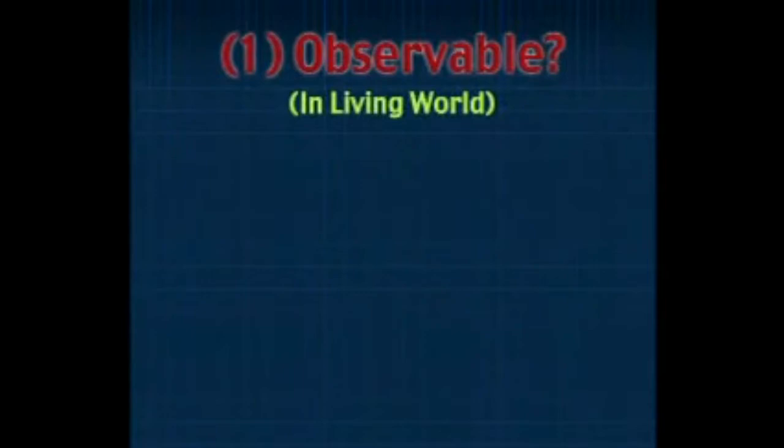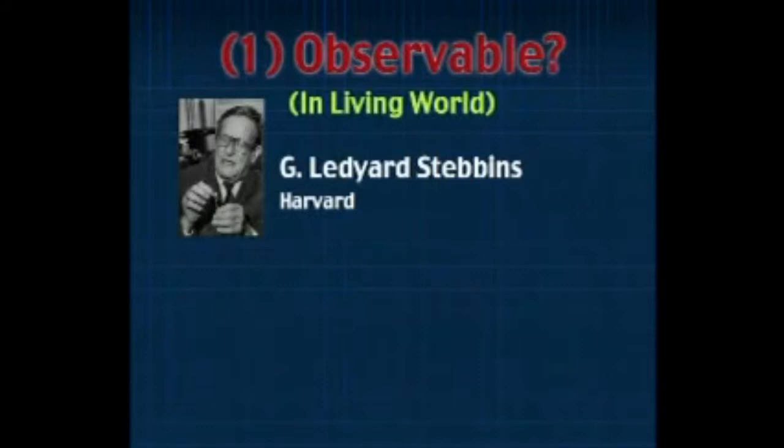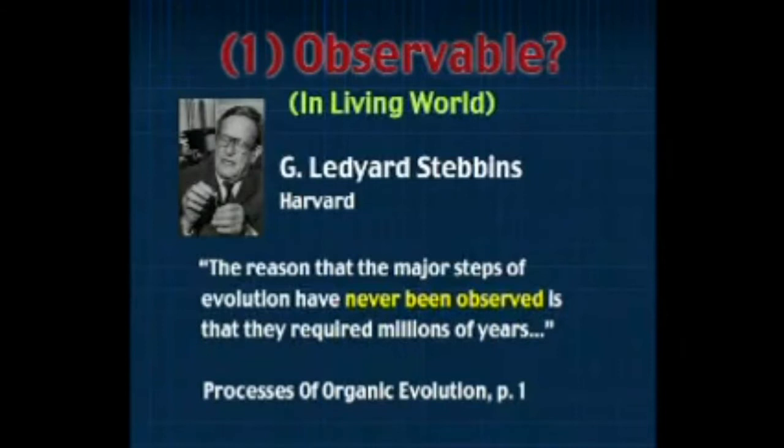How do these apply to the creation-evolution controversy? Is evolution in the general sense — not the special sense — observable? Can we see this in the living world? G. Ledyard Stebbins of Harvard, one of the leading evolutionists, says: the reason the major steps of evolution — talking here about the general theory — have never been observed is that they require millions of years. You do not observe them — it is historical. Jeffrey Schwartz, professor of anthropology at the University of Pittsburgh, says: it was and still is the case that — with the exception of Dobzhansky's claim about a new species of fruit fly, one that got an extra bump and then lost it — the formation of a new species by any mechanism has never been observed.